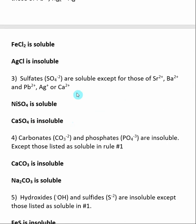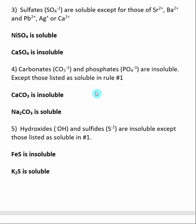Rule 3 says sulfates are soluble, except for those with Sr²⁺, Ba²⁺, Pb²⁺, Ag⁺, and Ca²⁺. For example, nickel(II) sulfate is soluble since nickel is not among the exceptions. Calcium sulfate, on the other hand, is insoluble because sulfates of Ca²⁺ are expected to be insoluble. Rule 4 says carbonates and phosphates are insoluble, except for those listed in Rule 1 — so Rule 1 dominates. Calcium carbonate is insoluble, but sodium carbonate is soluble because sodium is a Group 1 metal covered by Rule 1.